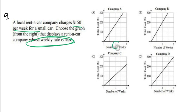So if you focus on one week for each company, based on the line they give you, when I go up from a week, I want to see who charges less than $150. That's it — not more, less than $150, and that's your answer.